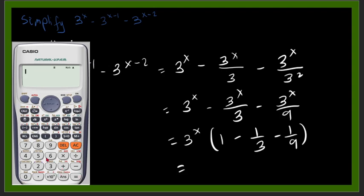So we have 1 minus 1 over 3 minus 1 over 9. Okay, and we have 5 over 9.